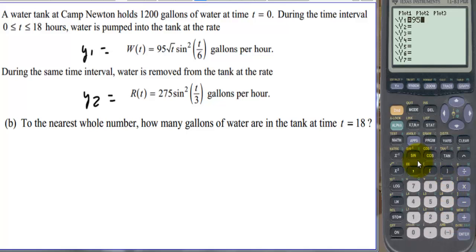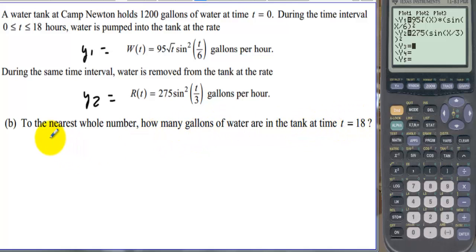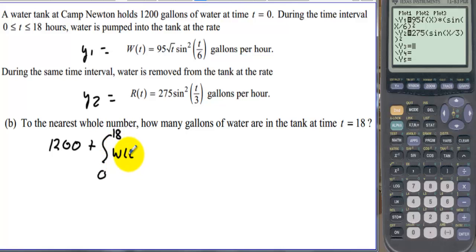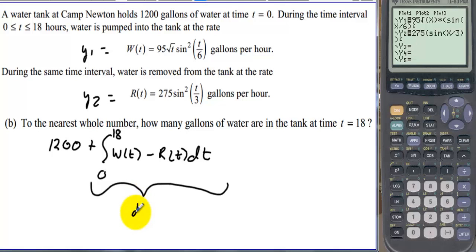We have y1 equals 95 times the square root of x times sine squared of (x/6), and y2 equals 275 times sine squared of (x/3). They want the number of gallons at t equals 18. We start with 1200 and add the integral from 0 to 18 of W(t) minus R(t) dt, which gives us the displacement — how much ended up in the tank after 18 hours.